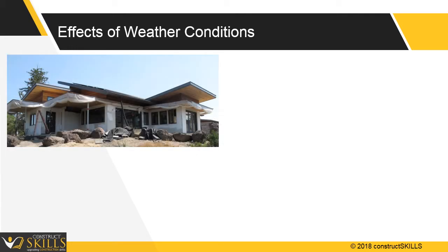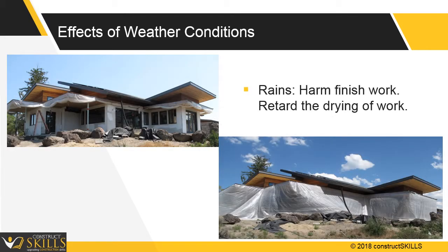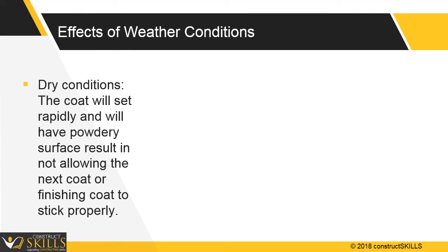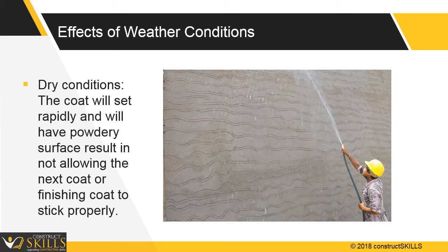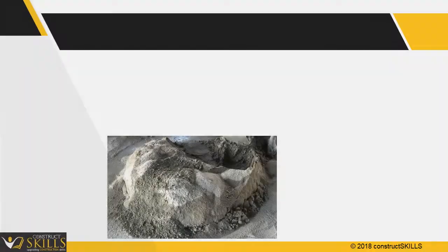The rainy season may impair finished plaster work by retarding drying out for periods of a week or a month. In dry conditions, the coat will set rapidly and will have a powdery surface, resulting in not allowing the next coat or finishing coat to stick properly. In this condition, the surface should be kept wet during the curing period.